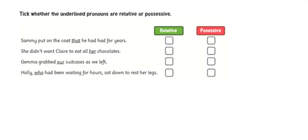So first of all, just to recap, can we have a go at this question? It says tick whether the underlying pronouns are relative or possessive. We've got: Sam put on the coat that he had had for years. She didn't want Claire to eat all her chocolates. Gemma grabbed our suitcases as we left. Polly, who had been waiting for hours, sat down to rest her legs. I would put 1, 2, 3, 4 down the side of my paper and write next to it relative or possessive to show which pronoun it is.